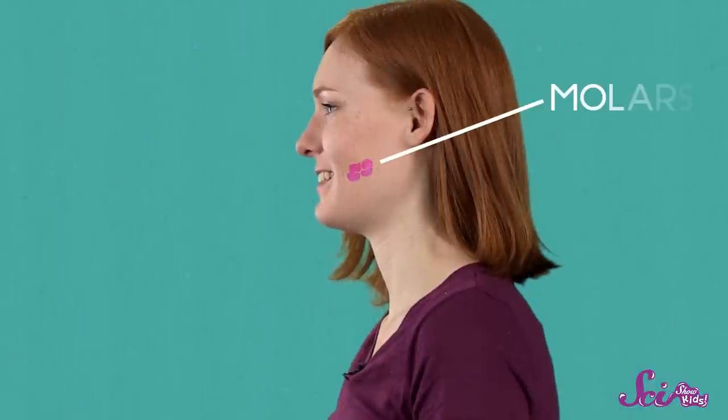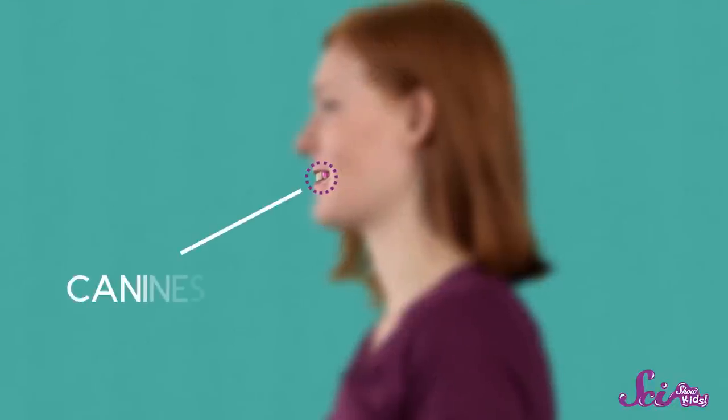People have different kinds of teeth. I have molars in the back of my mouth that help me grind up vegetables and other things, but I also have pointed canine teeth so I can tear through things like meat. Being able to eat different kinds of food is really important to help you stay healthy.